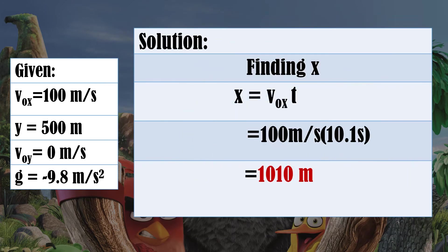For letter B, we find the range using x equals initial horizontal velocity times time. Substituting the values: 100 meters per second times 10.1 seconds equals 1010 meters. Therefore, the distance would be 1010 meters.